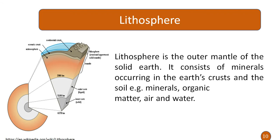The next component is the lithosphere. This is the outer mantle of the solid earth. As we can see in the diagram, the crust and uppermost soil mantle constitute the lithosphere. It consists of minerals occurring in the earth's crust and the soil. Examples of its contents include organic matter, minerals, air and water.